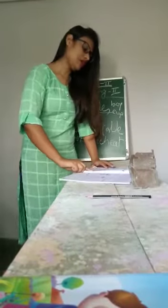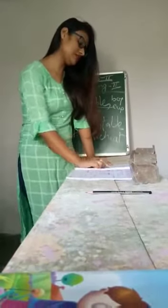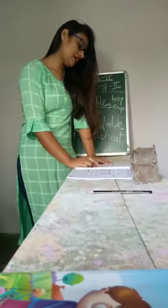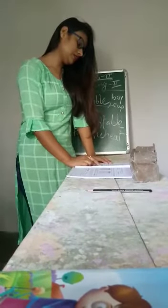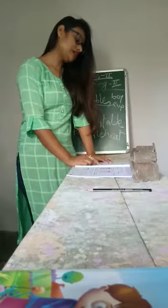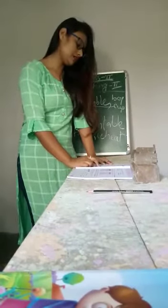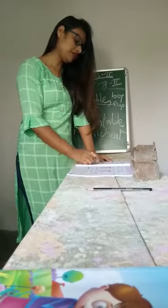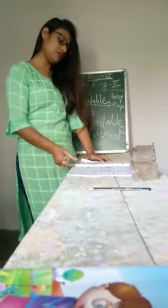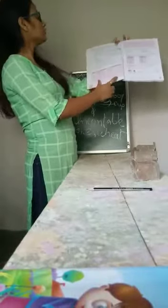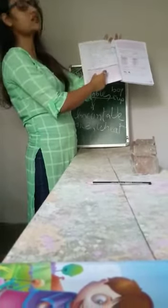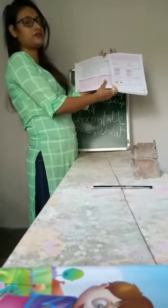Turn to page 12. Here we have some sentences, and we have to underline countable and uncountable nouns from the sentences. After underlining, we write the countable ones in the countable box and the uncountable ones in the uncountable box.